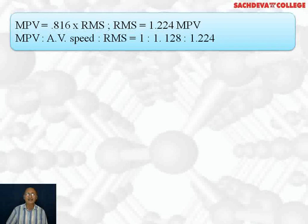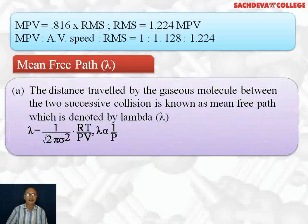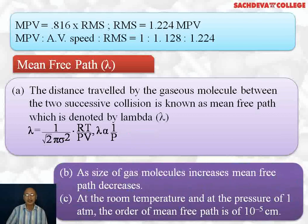This ratio was asked in IIT JEE in 2013. Next, the mean free path: the distance traveled by a gaseous molecule between two successive collisions is known as mean free path, denoted by λ. λ = 1 / (√2 π σ² × RT/PV). Lambda is inversely proportional to pressure. As the size of the gas molecule increases, mean free path decreases. At room temperature and pressure of 1 atm, the order of mean free path is 10⁻⁵ cm.